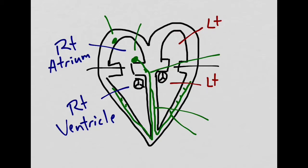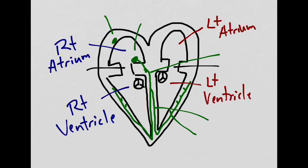This is the left atrium and it receives oxygenated blood from the lungs. The next chamber is the left ventricle. It receives the blood from the left atrium and then it will push it out through the aorta to the rest of the body.